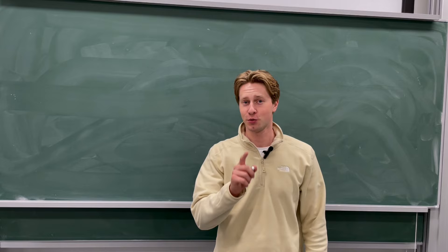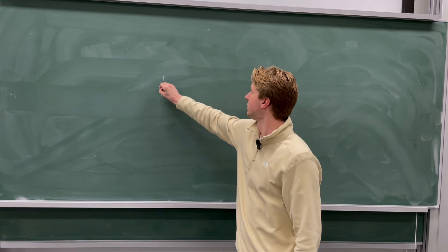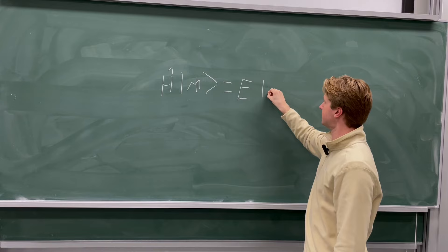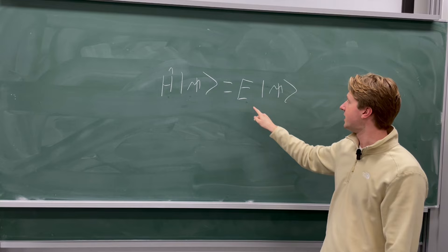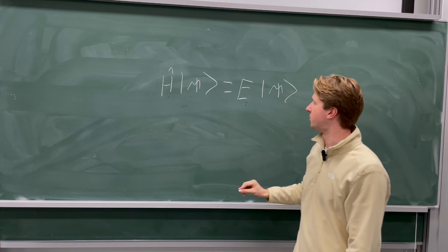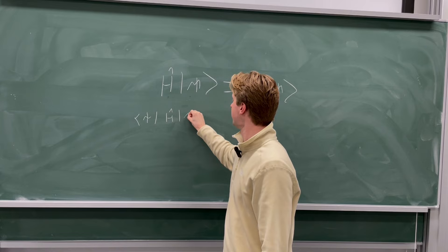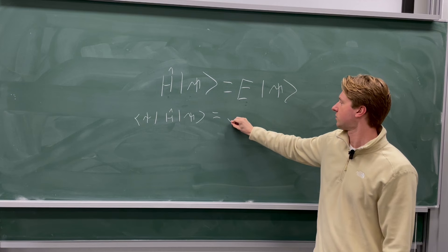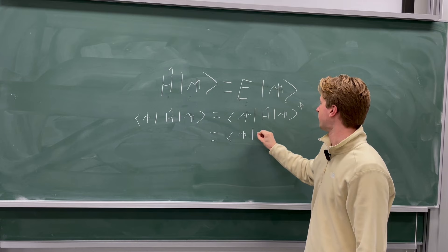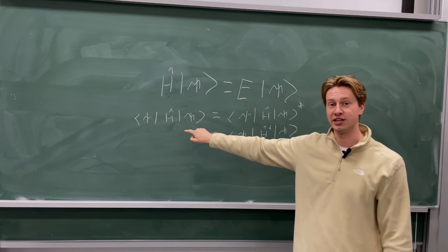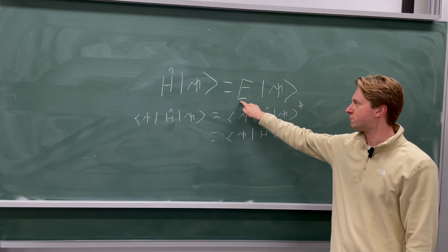Kostrykin and Schrader formulated their proof of this law from the axioms of quantum mechanics using the theory of self-adjoint operators. In quantum mechanics, the Schrödinger equation is solved to find the real-valued energies the system will take. The wave functions ψ are the eigenfunctions of the Hamiltonian operator and the energies are the eigenvalues. In order for the energies to be real — corresponding to real observables — the Hamiltonian operator must be self-adjoint.